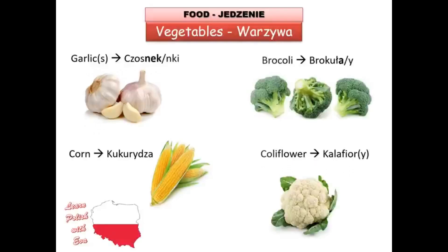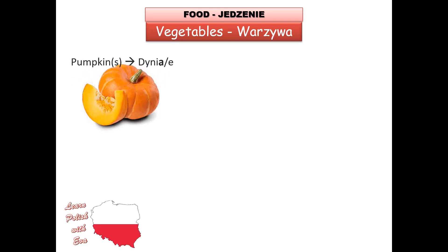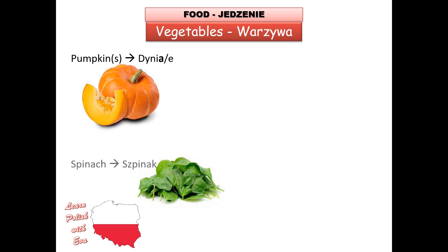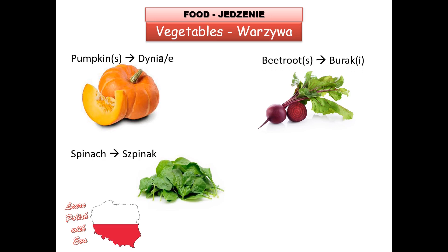Broccoli is not exactly the most popular vegetable there. Cauliflower is 'kalafior', 'kalafiory'. Next, the one from Halloween town — we don't celebrate Halloween in Poland — but pumpkin is 'dynia', 'dynie'. Spinach is 'szpinak', 'szpinaki'.